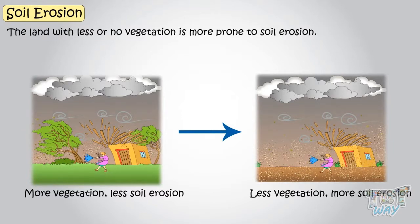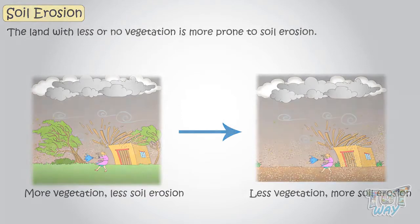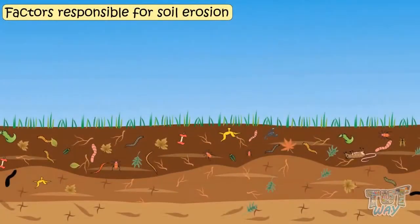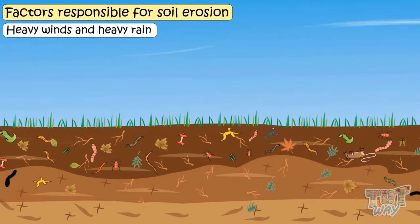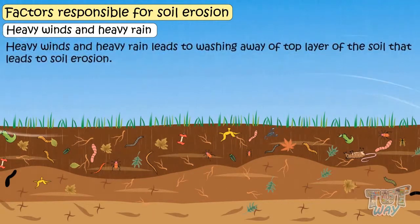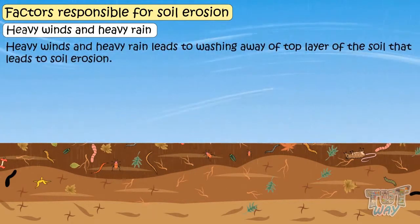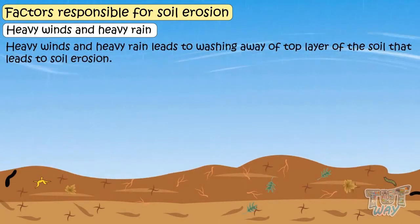Now let's learn some major factors responsible for soil erosion. Heavy winds and heavy rain lead to washing away the top layer of soil, which leads to soil erosion.